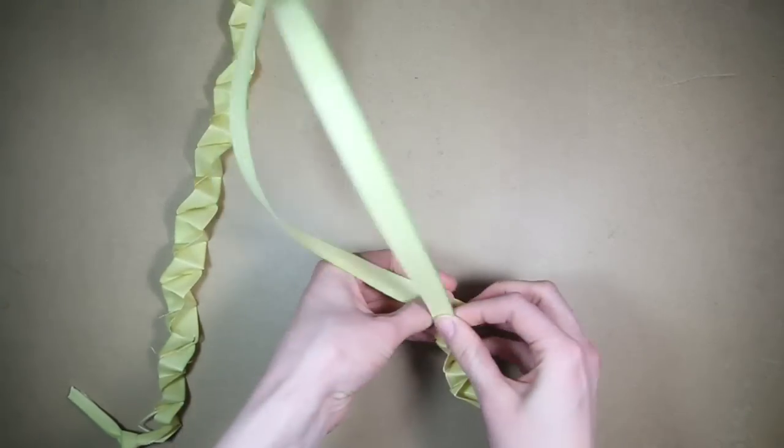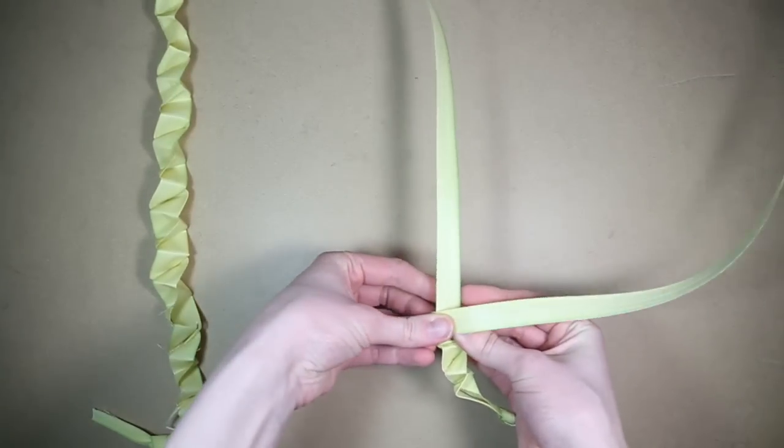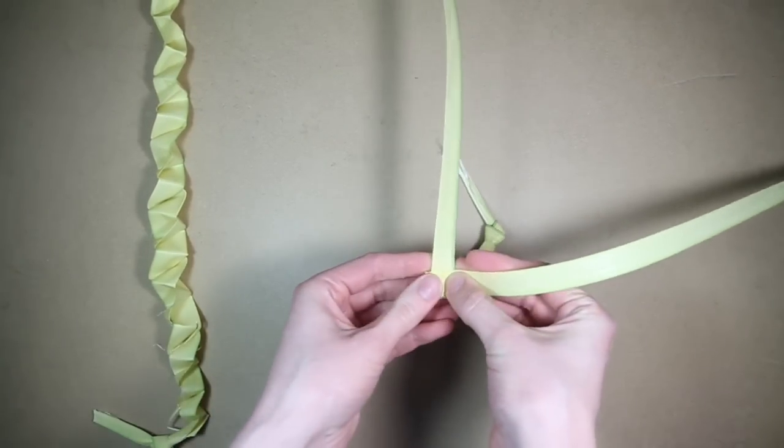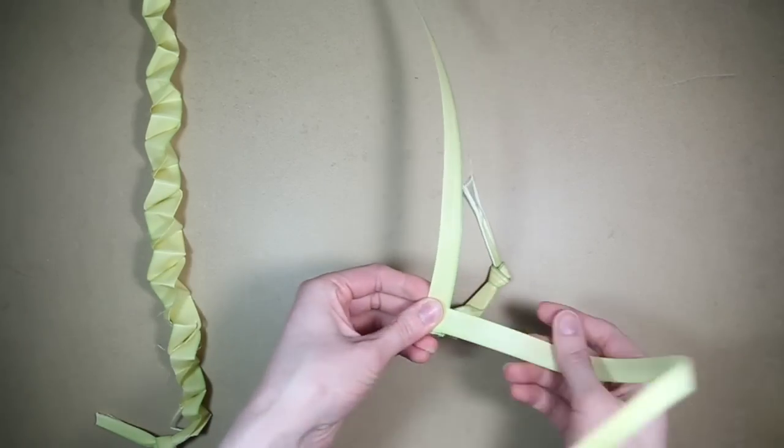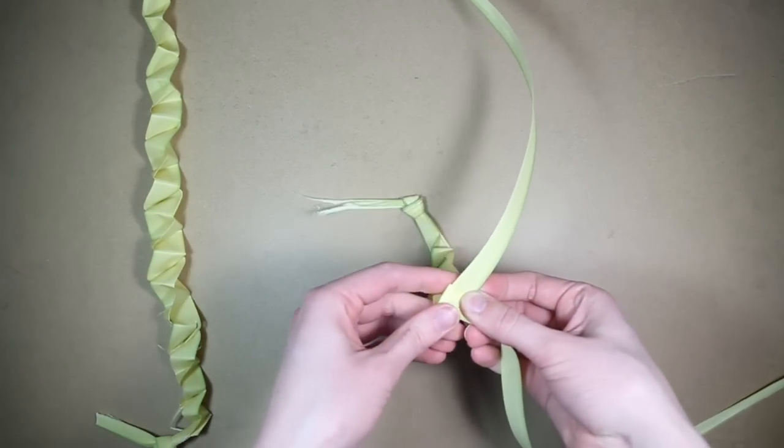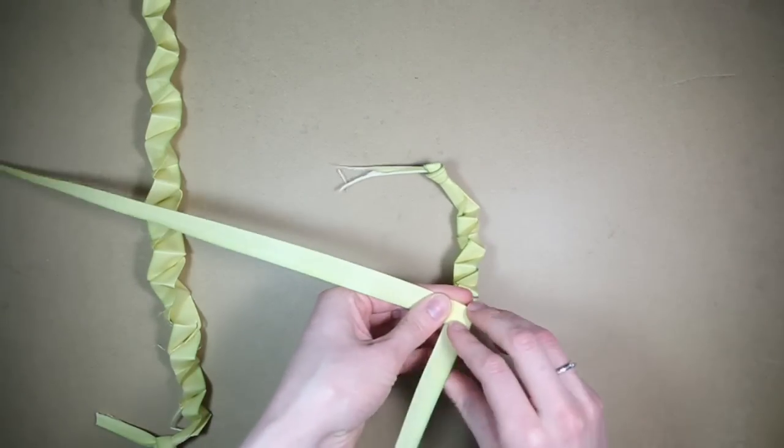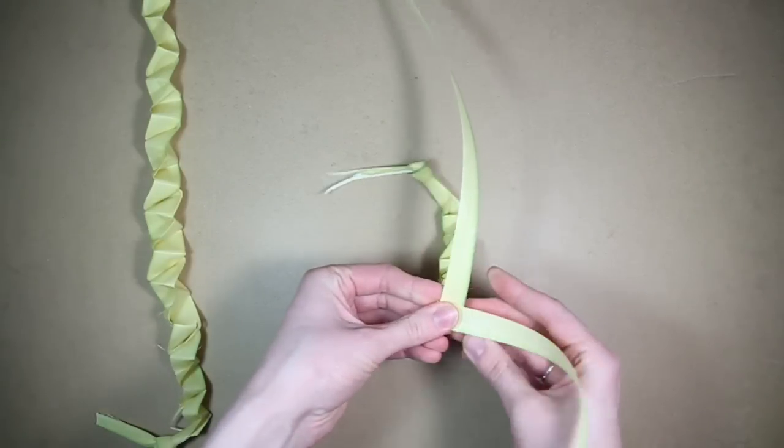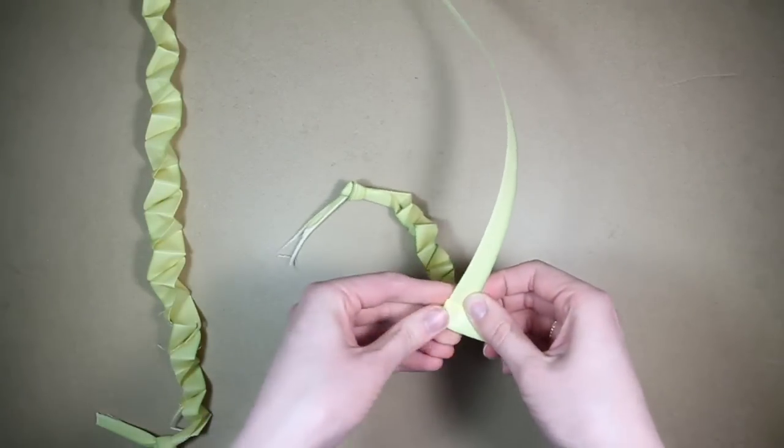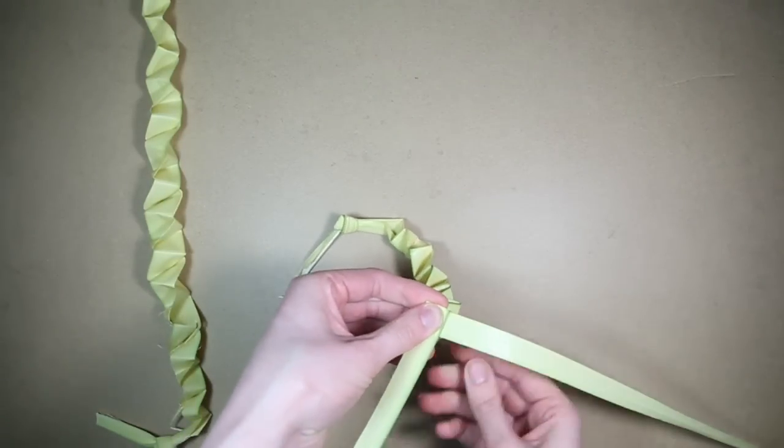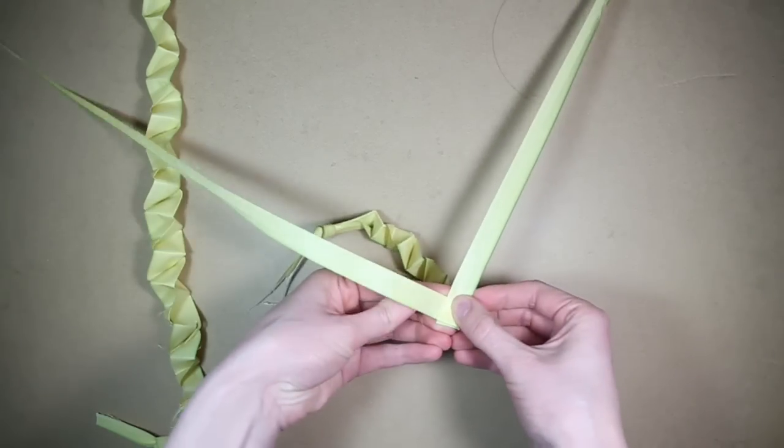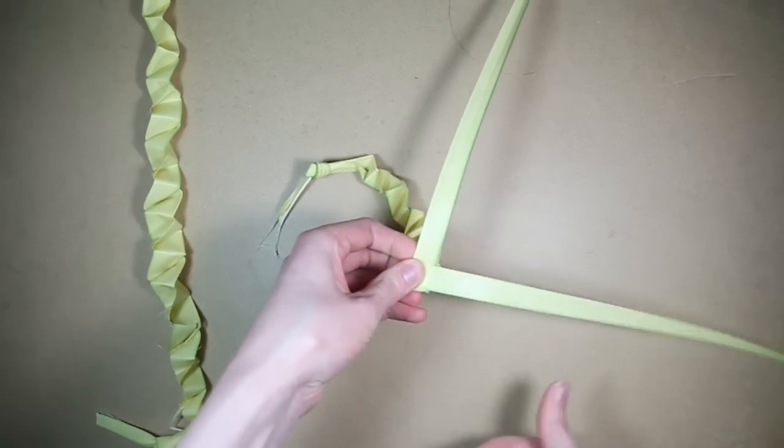I find that if you want to practice this but you don't have any palm branches at your disposal, poster board works really well for palm folding because it's similar in texture and thickness. So if you want to practice this but you don't want to waste your good palms you get at Palm Sunday, then you can just use poster board.